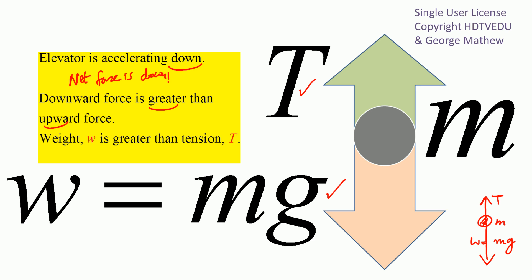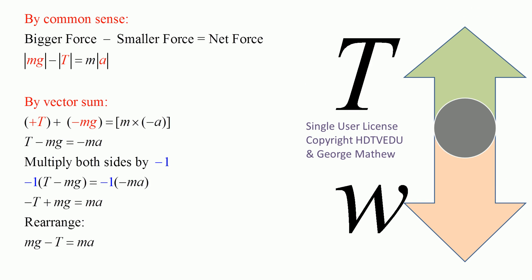The equation of motion: gravitational force minus tension equals net force, which equals ma. So w minus T equals ma, or mg minus T equals ma.